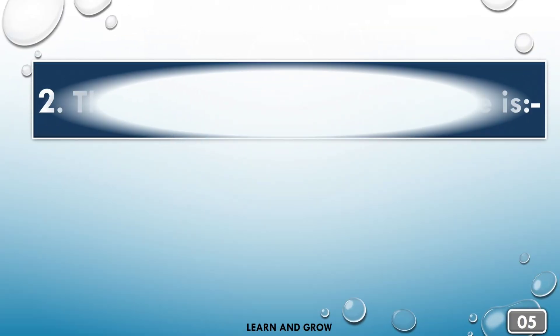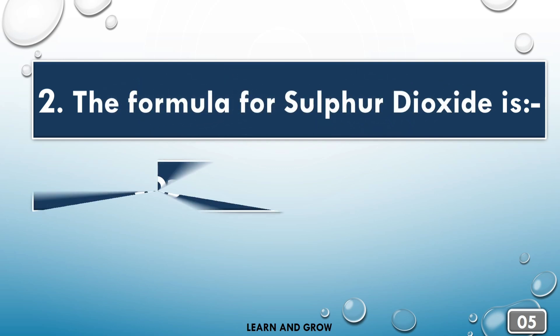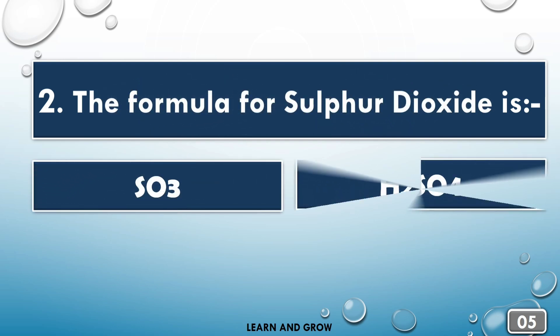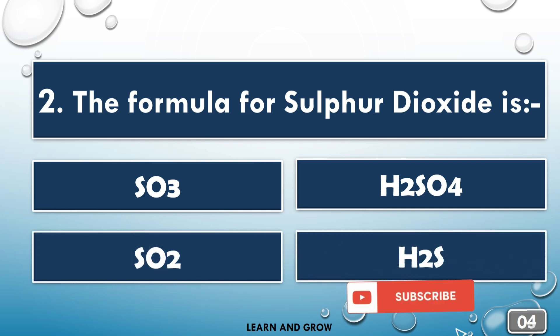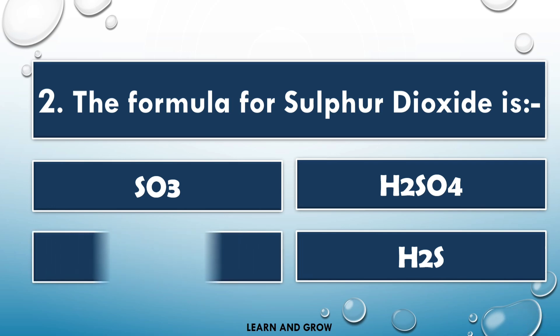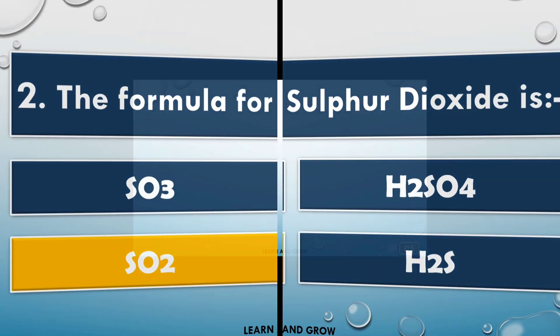The formula for sulphur dioxide is SO2. The correct answer is option C.